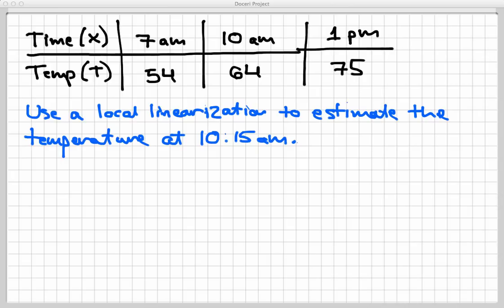Let's first of all normalize some of the scaling here, especially in the time. So let's arbitrarily set 7 a.m. to be time equals zero. That would make 10 a.m. time equals three hours later. And then three hours later than that would be 1 p.m., and that's time equals six. And so that would make 10:15 a.m., that's three hours plus another quarter of an hour. So that would make that x equals 3.25.